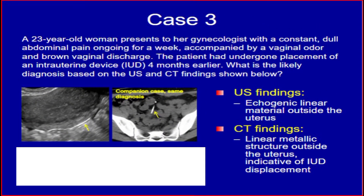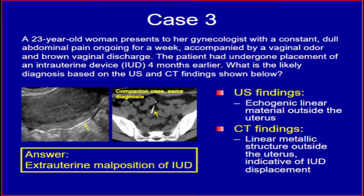Case 3. A 23-year-old woman presents to her gynecologist with constant dull abdominal pain ongoing for a week, accompanied by vaginal odor and brown vaginal discharge. The patient had undergone placement of an intrauterine device four months earlier. Ultrasound findings: echogenic linear material outside the uterus. CT findings: linear metallic structure outside the uterus, indicative of intrauterine device displacement. The answer is extrauterine malposition of the IUD.